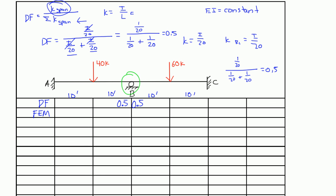You look at each span and write the fixed end moments for that span. For span AB, the fixed end moments — remember, you have a clockwise and a counterclockwise moment, each equal to PL over 8, one negative and one positive. So PL over 8 is 40 times 20 divided by 8, which gives you negative 100. I'm going to write that on the left side, corresponding to the moment at A. Same thing for B, except this time it's positive, so the fixed end moment is 100.